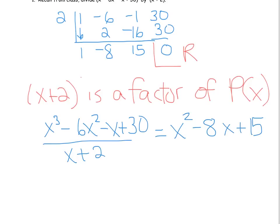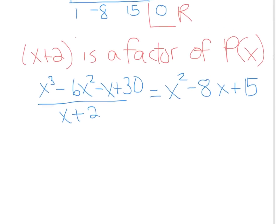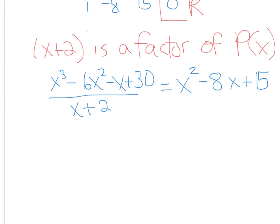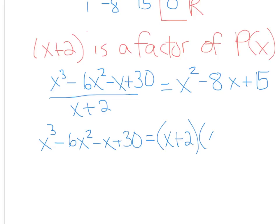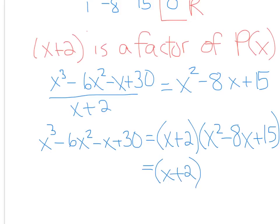We can now work with that expression, and this means that x cubed minus 6x squared minus x plus 30 equals x plus 2 times x squared minus 8x plus 15 — I just brought the x plus 2 over. Hopefully you can see that you can actually factor that simple trinomial a little bit further. If we look at that, it looks like we're going to get x minus 5 and x minus 3.